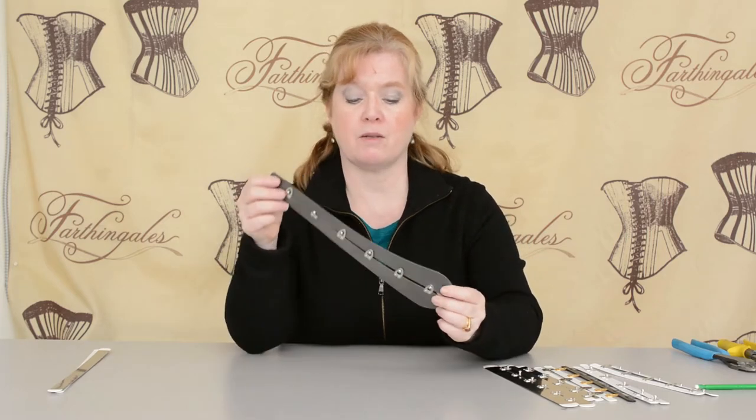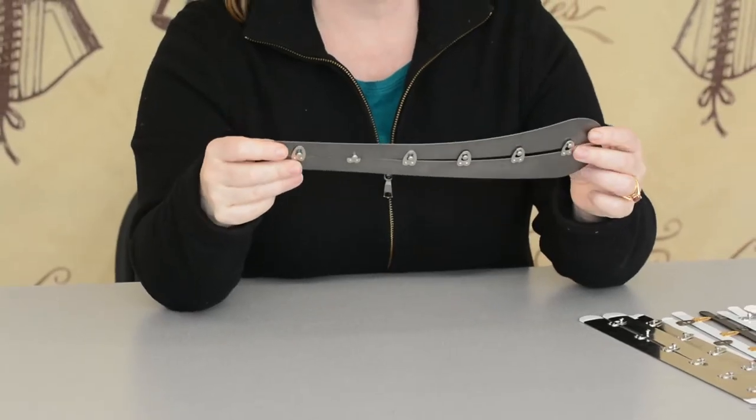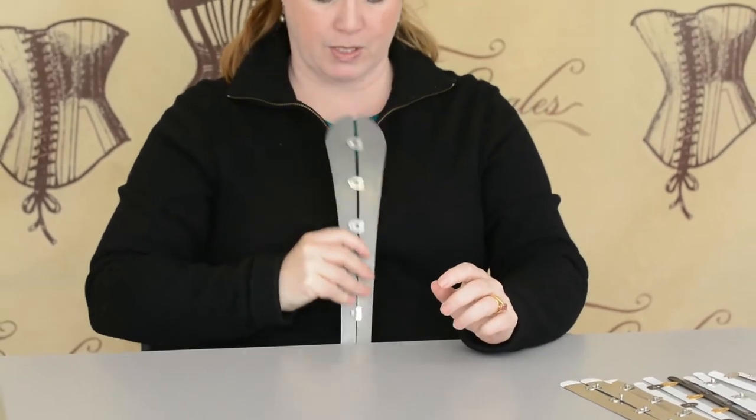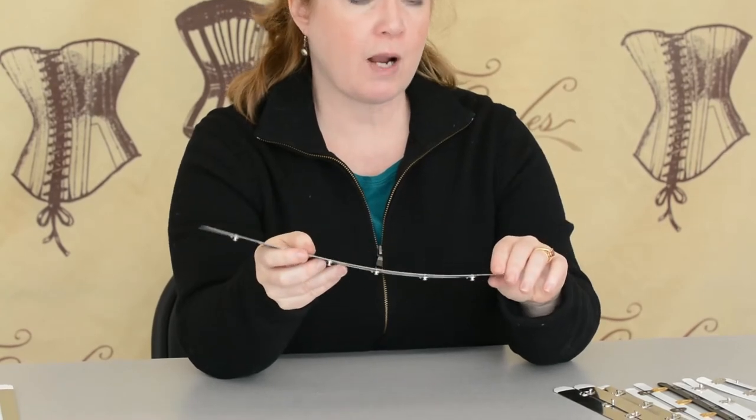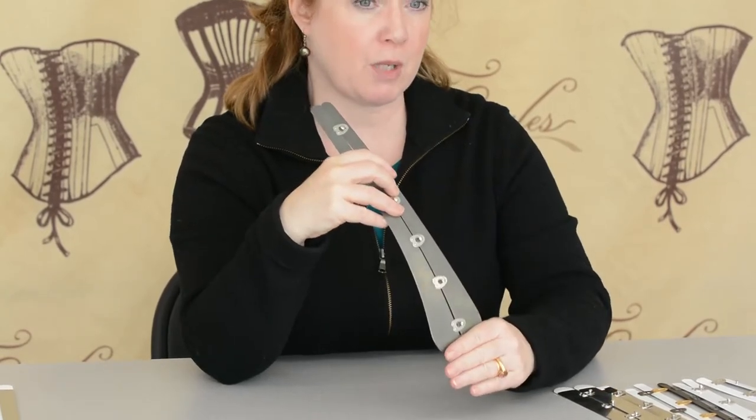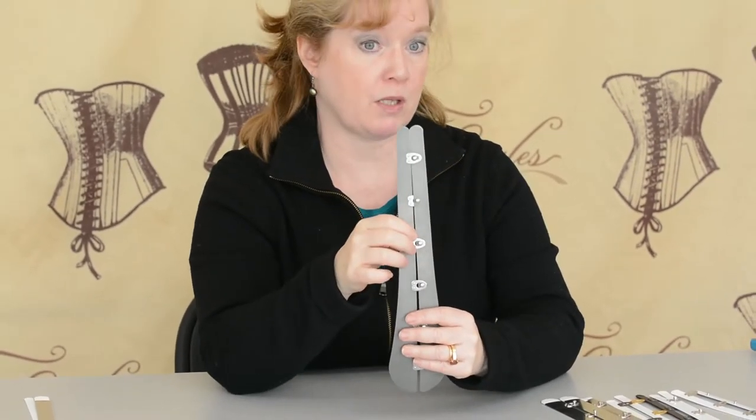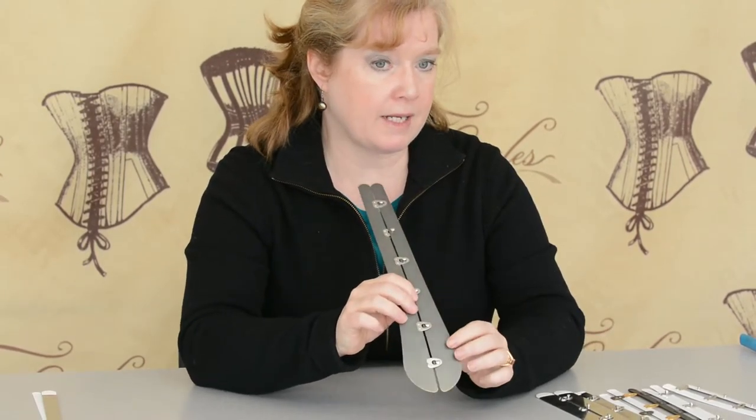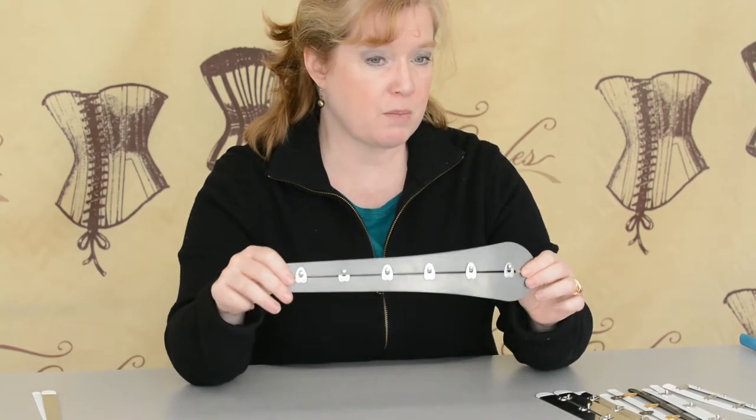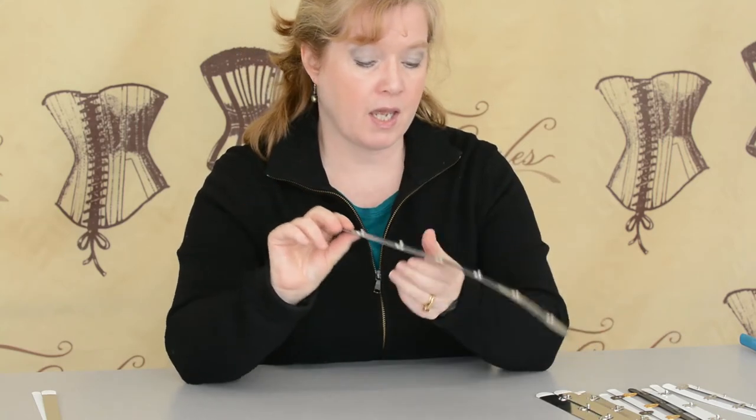This is a spoon busk, and you can see it's shaped like a spoon. Quite often at trade shows, people pick this up and think it goes this way. It doesn't. The bowl of the spoon goes around your stomach, hugging your stomach and tucking in at the bottom. The handle of the spoon goes up between the breasts. A spoon busk is historically accurate to the late 1800s. It's much more expensive because it's much more shaped. It is still flexible but more rigid. Really people are usually using it if they're doing historic reproduction.